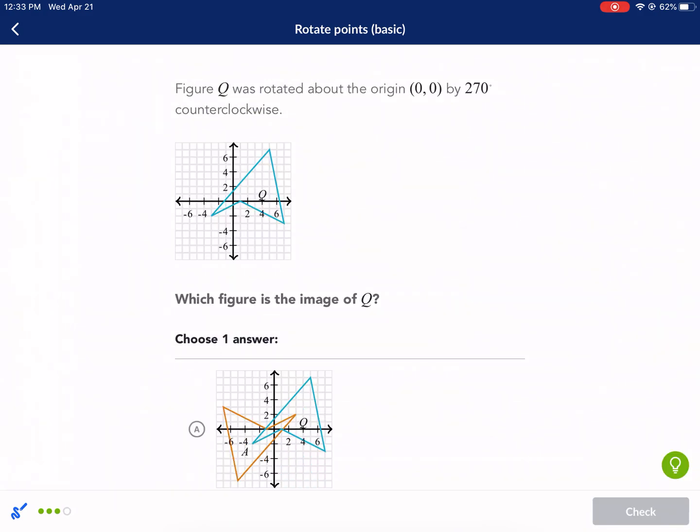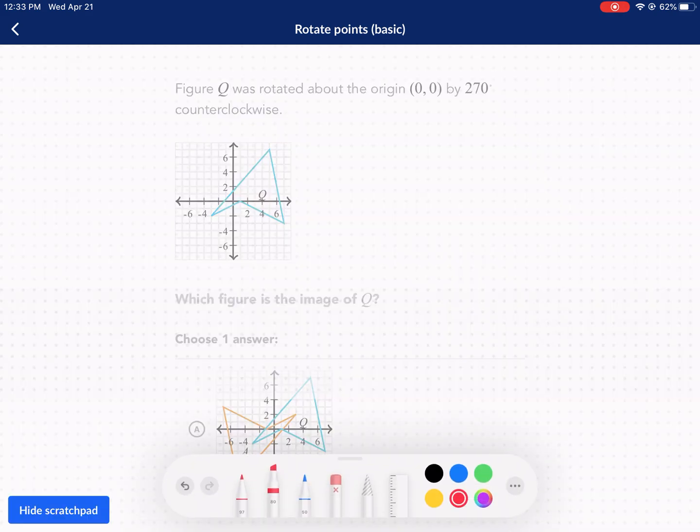And we're on our last question. Figure Q was rotated about the origin, 270 degrees, counterclockwise. So that's the equivalent of what? Counterclockwise 270, clockwise 90. So this is the same thing as 90 clockwise.